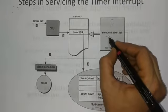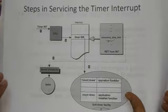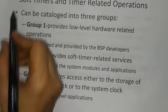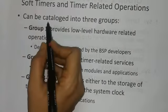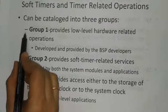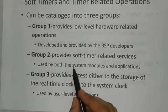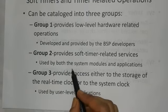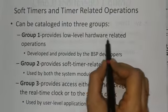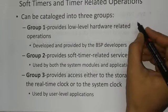Now we focus on timer-related operations. There are three types of timer-related operation groups: Group 1, Group 2, and Group 3. In any operating system, some level of architecture is maintained. Group 1 provides low-level hardware-related operations. Hardware-related operations involve maintaining the hard clock — we have two types of clocks: hard timers and soft timers.